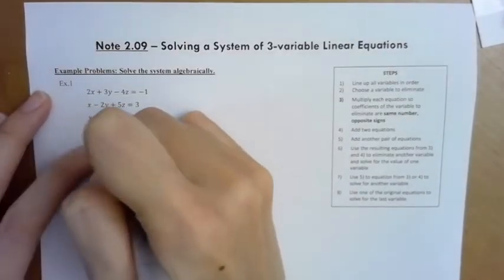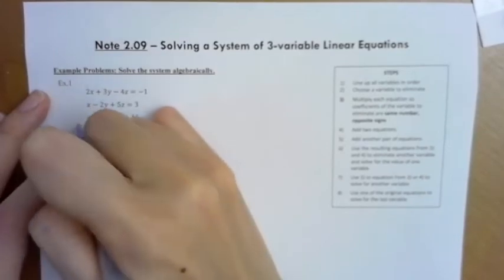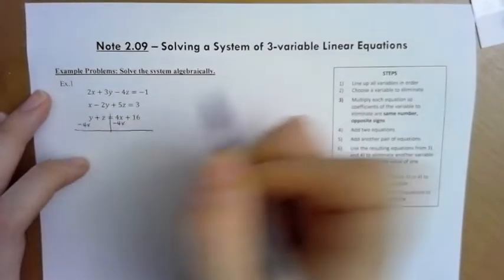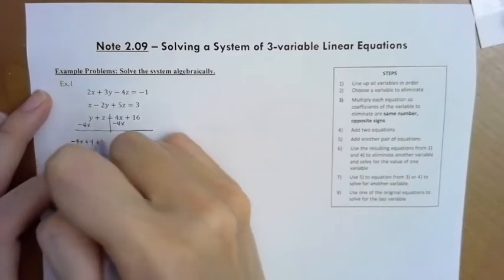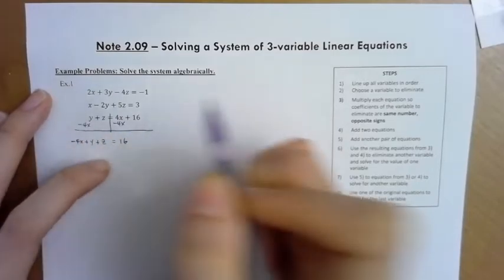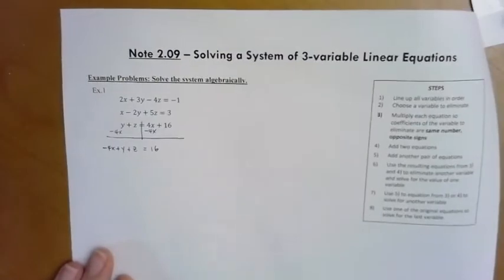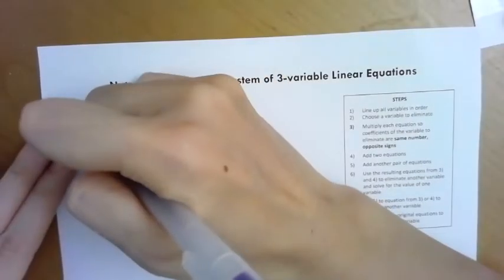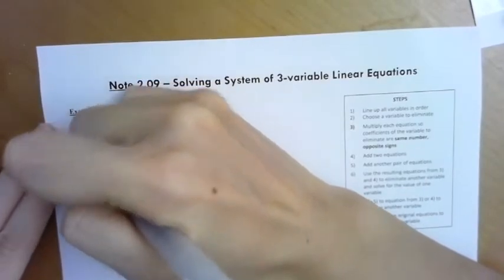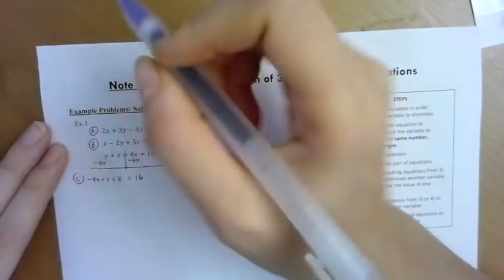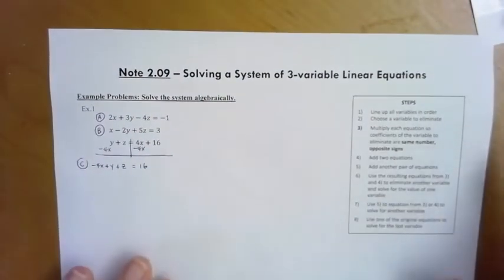So we're gonna go ahead and clean up this by subtracting 4x on both sides. Alright so now I'm gonna look at, so here listen there's a lot to keep track of, so I'm gonna actually letter each equation a, b, and c so I can keep track of which one I'm using, which one I'm not using.